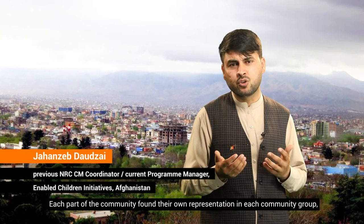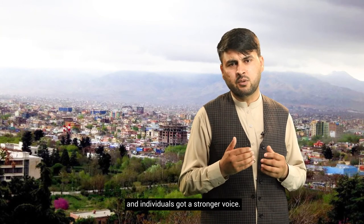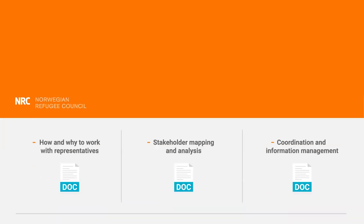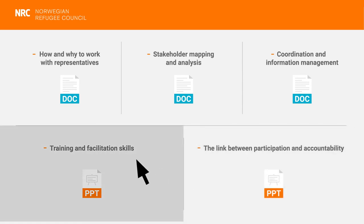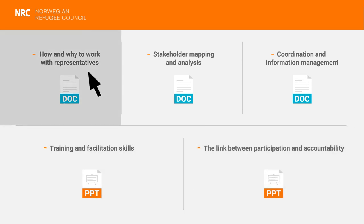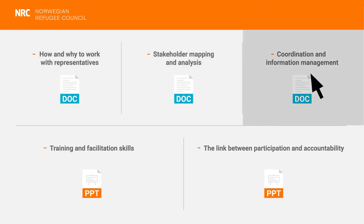Each part of the community found their own representation in each community group and individuals got a stronger voice. In the staff training chapter, there are modules on participation and accountability, community facilitation skills, how and why to work with representatives, community stakeholder mapping and analysis, and coordination and information management.